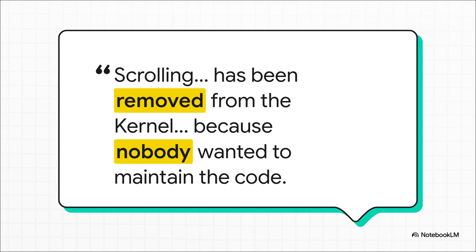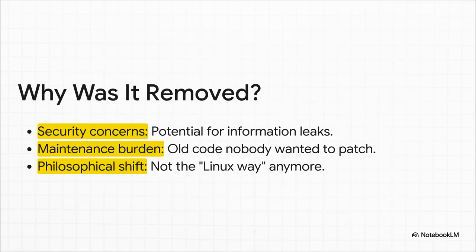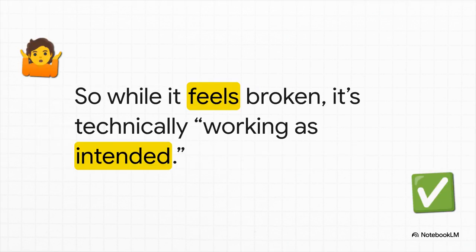The built-in scrollback buffer — the very thing that used to let you see previous output — was deliberately ripped out of the Linux kernel. It's not broken. It's gone. Why would they do that? It really boils down to three main reasons. First, security: that buffer could, in theory, leak sensitive information. Second, it was a total maintenance nightmare — old, clunky code that nobody wanted to touch. And finally, there was a philosophical shift. The modern Linux way is all about using dedicated tools that do one job really well, and kernel scrollback just didn't fit that model anymore. So this means what feels like an obvious bug is, in the eyes of the kernel developers, the system working as intended.